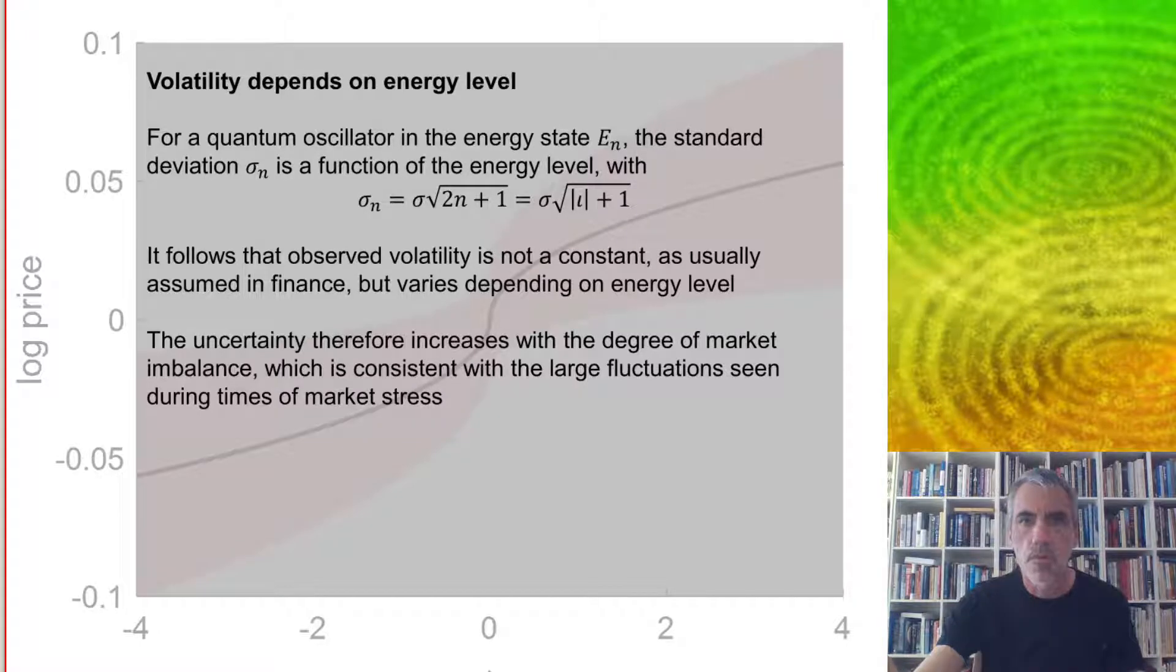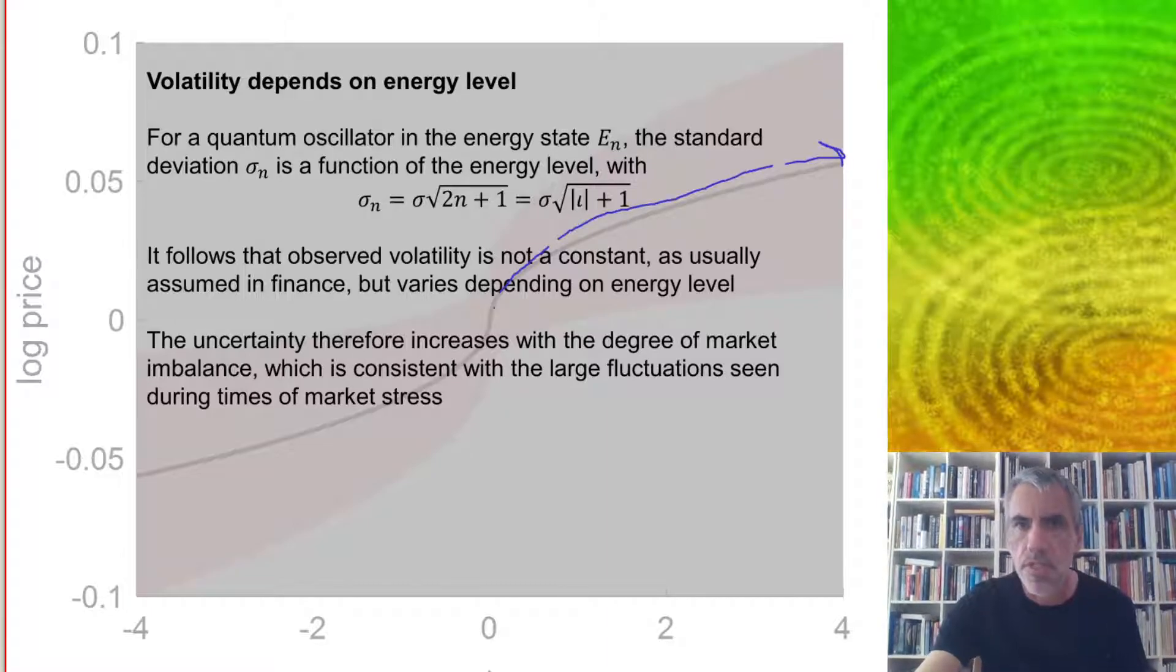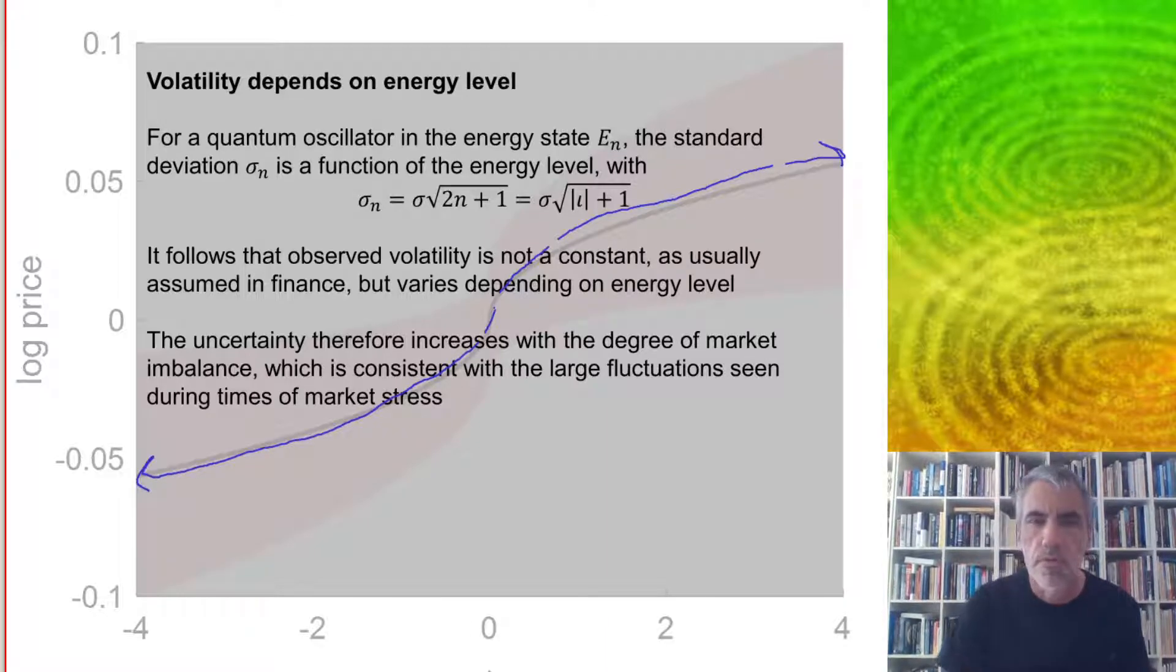So what that equation looks like is, for positive IOTA, you have a square root shape and then over here we have kind of a reflected square root for the negative.